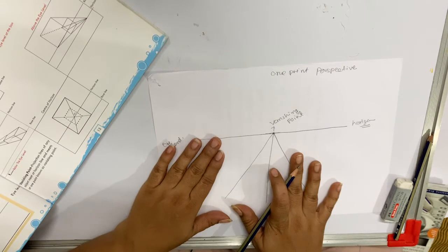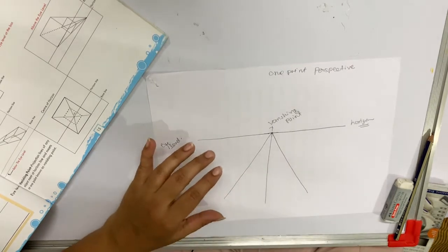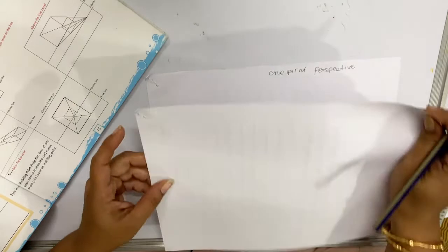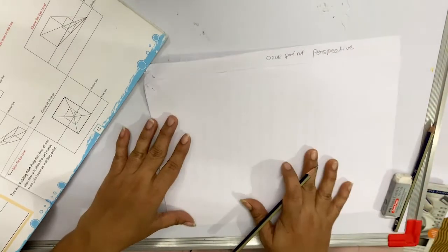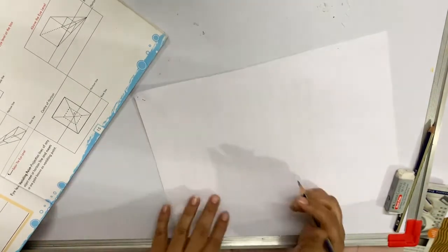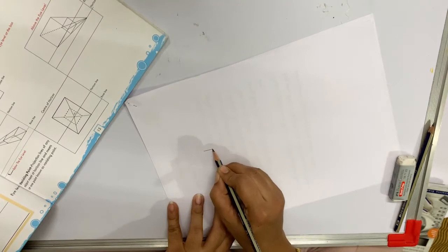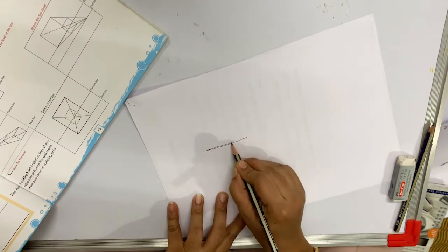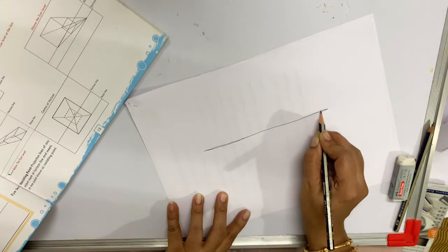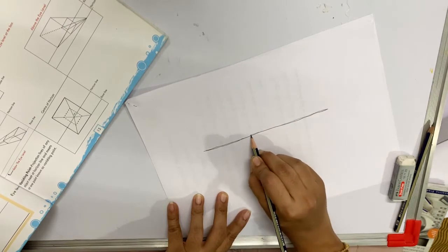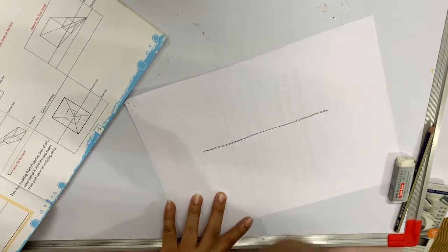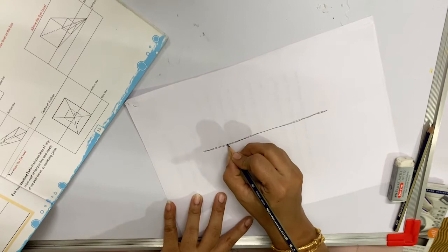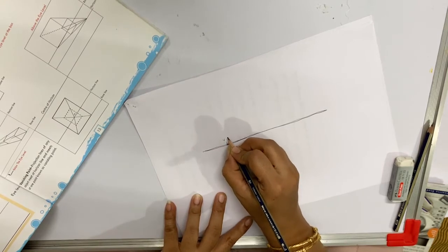Now, when this technique is used to create a 3D object, how can we create a 3D object? First, we will draw a horizontal line. Now on this line there is a vanishing point here.